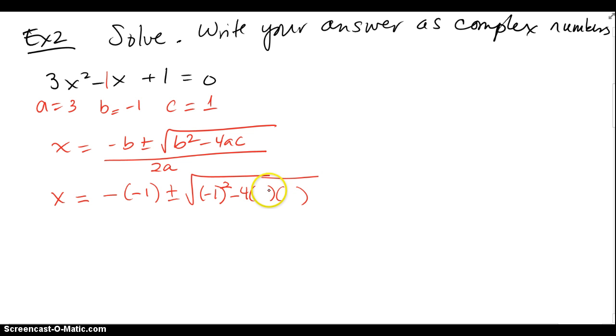And then a location for c, leave it open, always put parentheses when you're substituting. So a is 3, and c is 1 in this case, all over 2a which is 3.